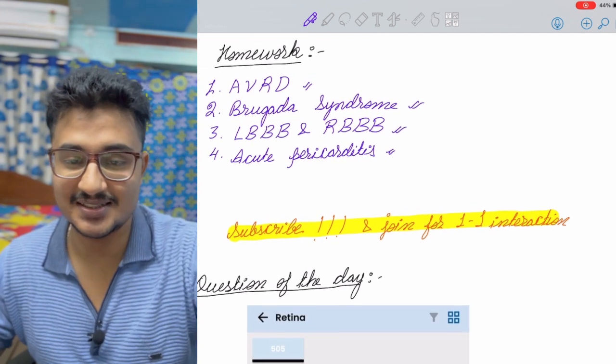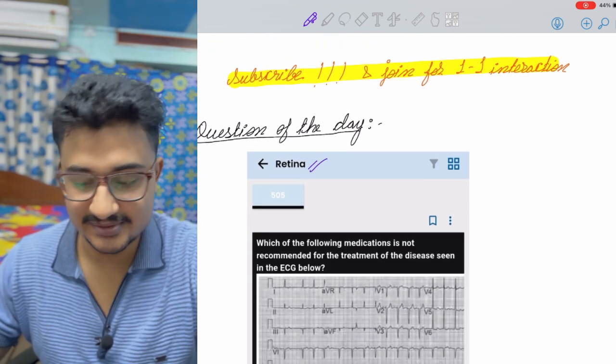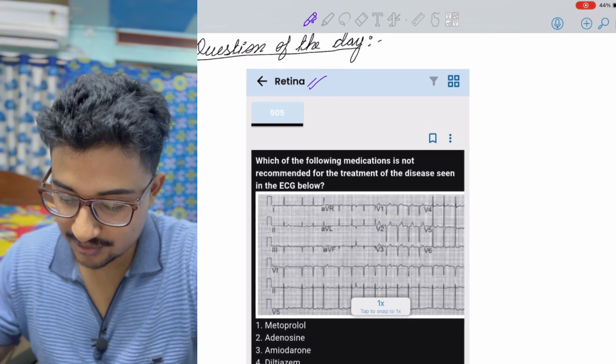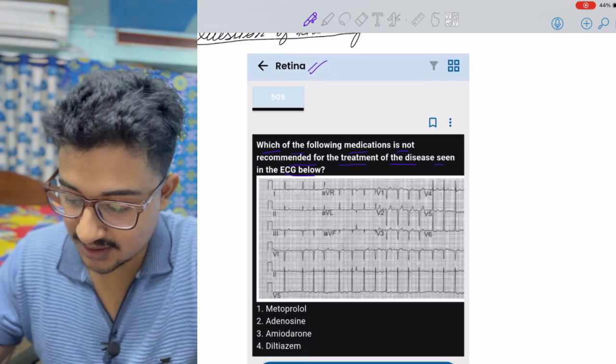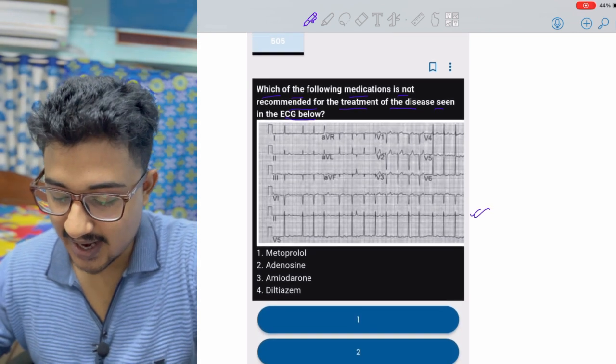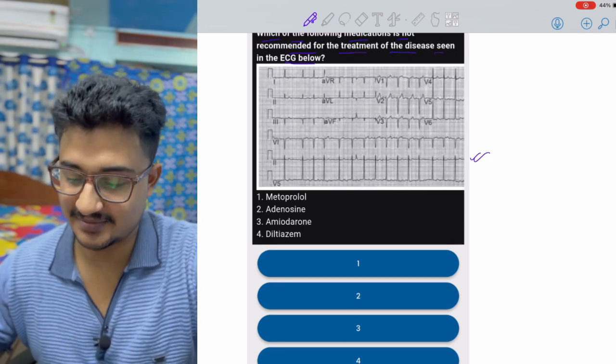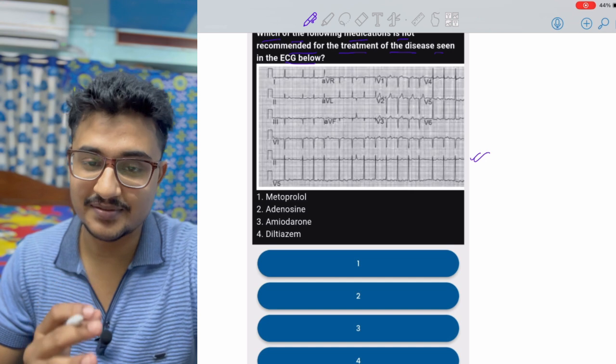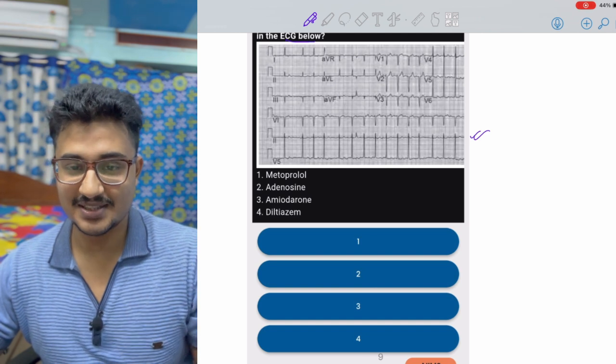As you know there is a question at the end in my every video. This has also been taken from the Retina of Reflex App and this is a good question. This was asked in previous year exams also. Which of the following medication is not recommended for the treatment of the disease seen in the ECG below? You carefully see the ECG and diagnose the condition. Tell the answer among these four options, which drug you won't give in this patient. Do let me know in the comment section below. I would try to give heart reacts to all the participants who have given answer correctly. Now you can see another video popping up. All the best. Take care. Bye-bye.